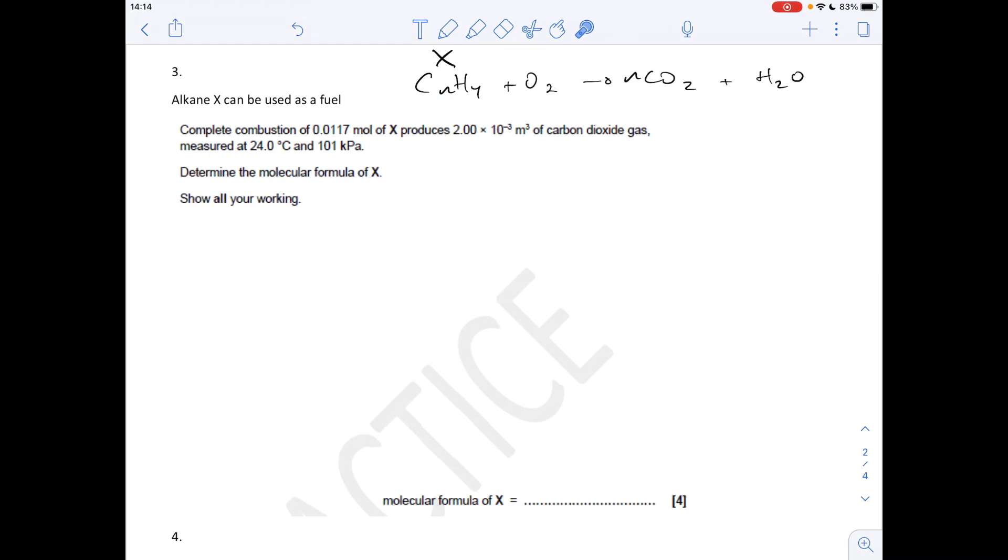We're going to do that by performing an ideal gas equation calculation because we've got volume, temperature, and pressure. We're going to work out the moles of CO2 and then work through backwards in the combustion equation to work out how many carbons are in the fuel.